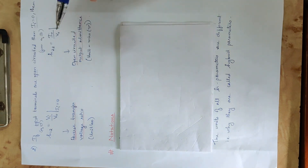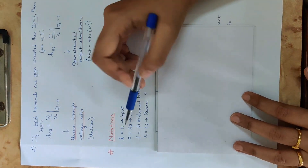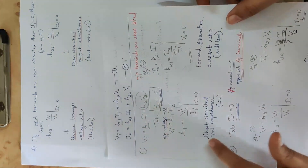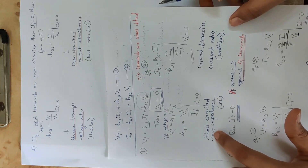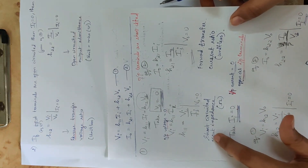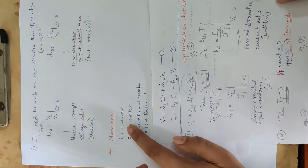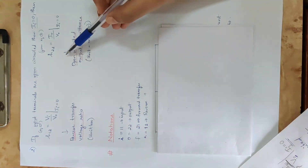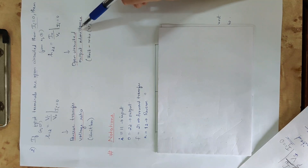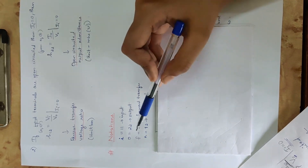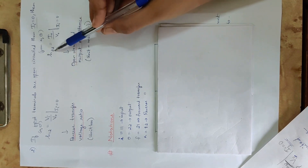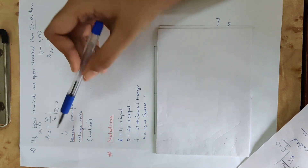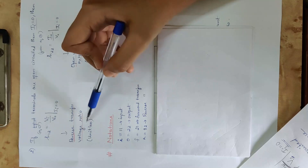We will replace h12, then h11. This is the output admittance. We will replace h12. We will replace the reverse transfer voltage ratio.